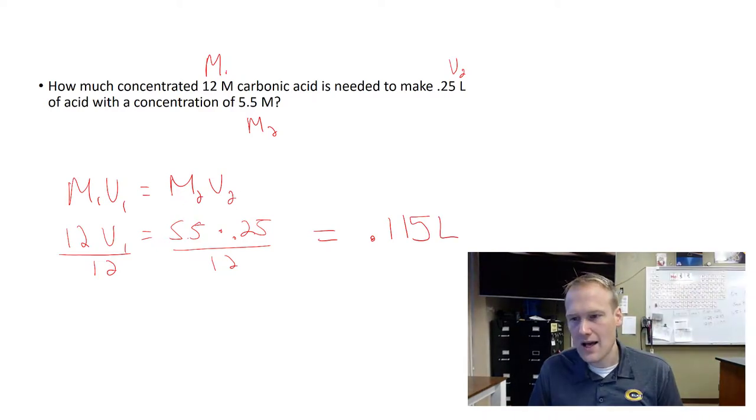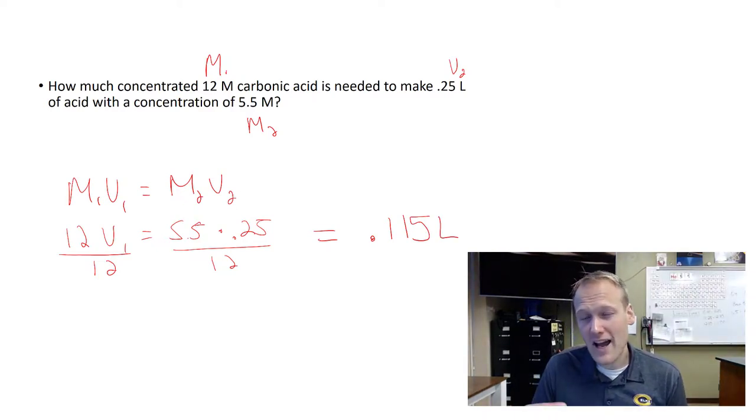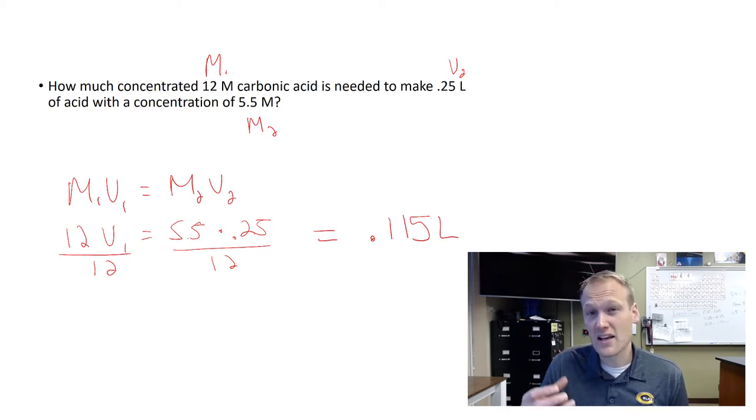So now I know how much of the 12 molar acid I need in order to dilute it appropriately. And I can subtract my two volumes to know how much water I need to add. So I would put 0.115 liters of the 12 molar acid in a beaker, and then I'd add enough water to get to 0.25 liters, and it would be 5.5 molar.